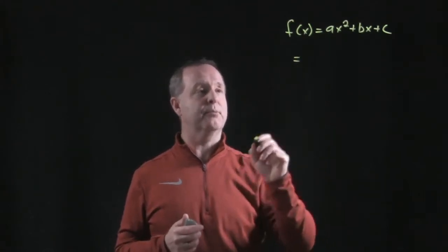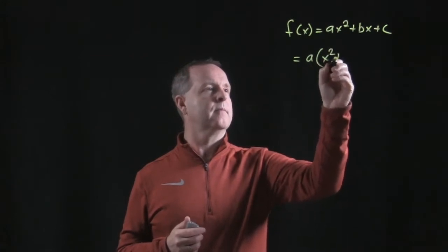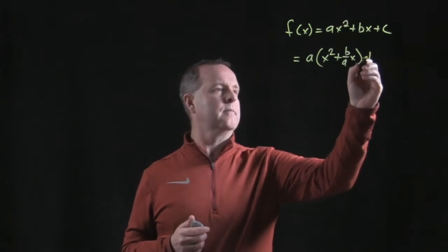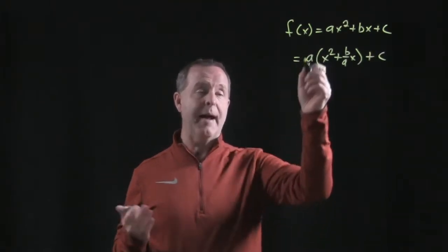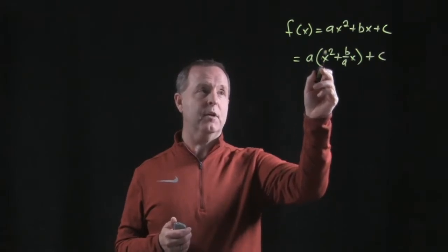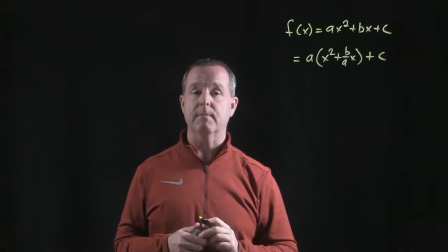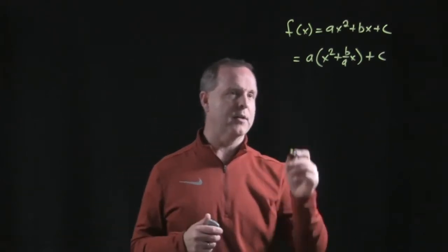I know that this expression is also equal to this expression. And to confirm that, we can go backwards. Let's multiply a to this first term, ax squared. a to this term just leaves me with bx. Why did you do that? Well, let's pay attention here.